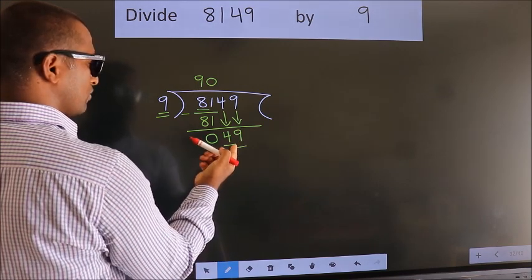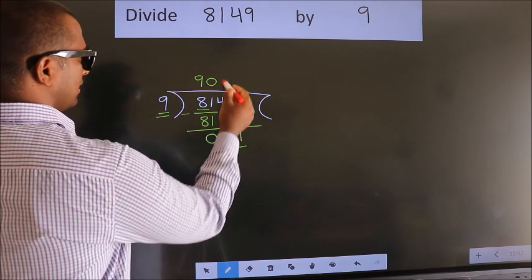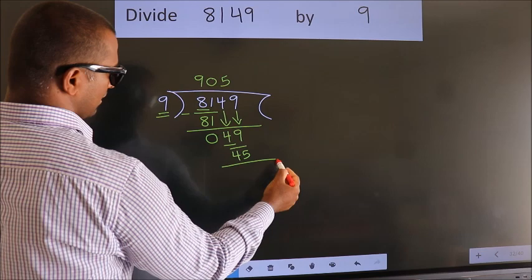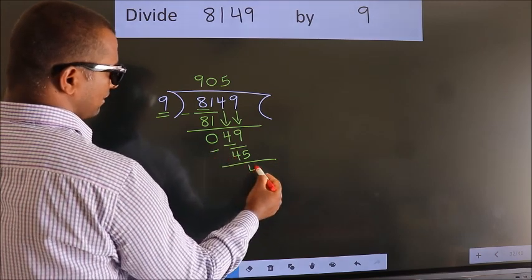A number close to 49 in the 9 table is 9 fives, 45. Now we subtract. We get 4.